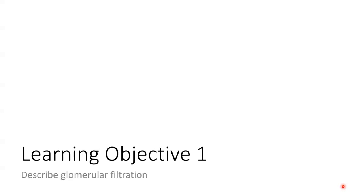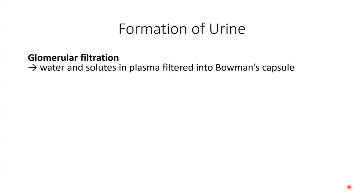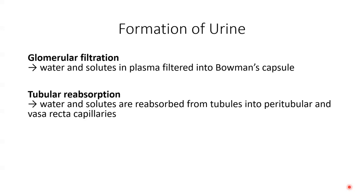Learning objective number one is to describe glomerular filtration. To produce urine, nephrons and collecting ducts perform three basic processes: glomerular filtration, tubular reabsorption, and tubular secretion. Glomerular filtration is the first step, where water and most solutes in the blood plasma move across the wall of the glomerular capillaries, filtered through the glomerular filtration membrane, and move into the Bowman's capsule and then into the tubules. Tubular reabsorption occurs as this filtered fluid goes through the renal tubules and collecting ducts, and the tubule cells reabsorb most of the water and any solutes the body needs back into the blood.